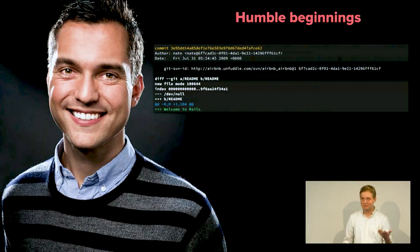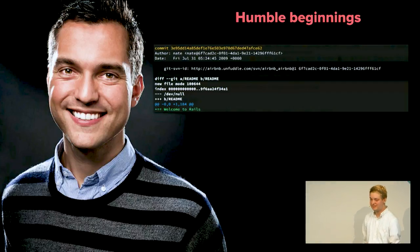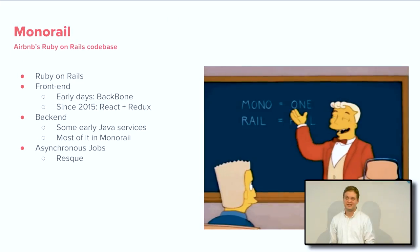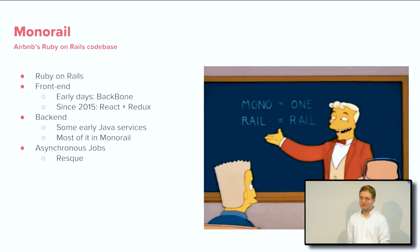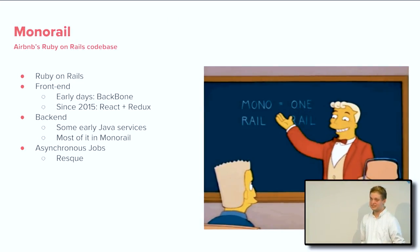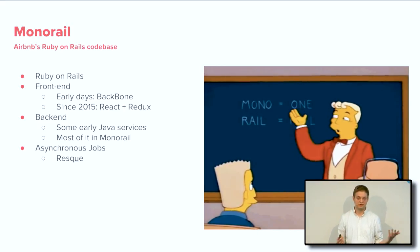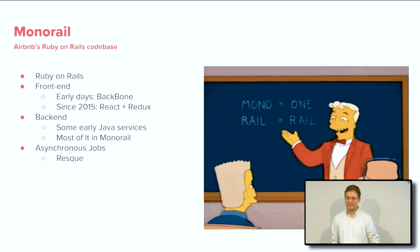Humble beginnings — there were just three guys trying to get by. You do Rails in your terminal and you're good to go. But it has a big butterfly effect. What is MonoRail, as we call it nowadays? Mono — One, Rail — Ruby on Rails. MonoRail is our internal code name for the application that Nate made back in the day. It's a very big Ruby on Rails application.